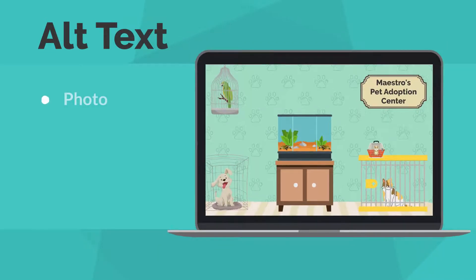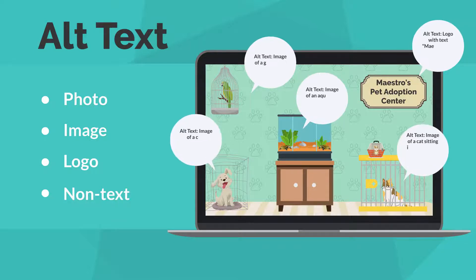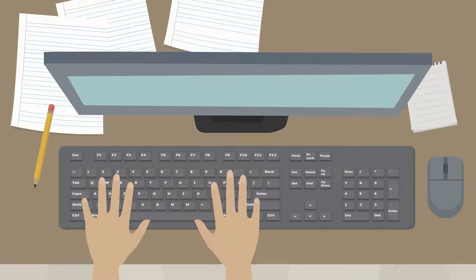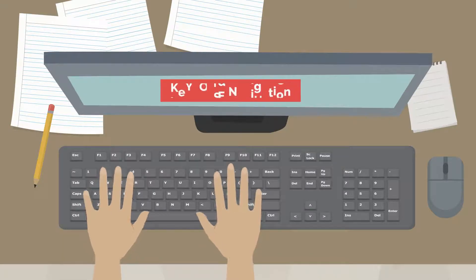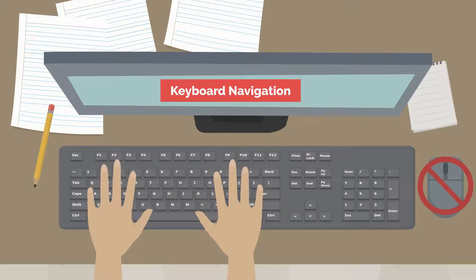Add descriptive alt text to every essential photo, image, logo, or other non-text element so low vision individuals can use screen readers. Design buttons and input fields to be navigated using keyboard shortcuts. For some with sight impairment or a physical disability, traditional mouse navigation may not be an option. It's also helpful to provide a button over long lists of links to get to the main content.